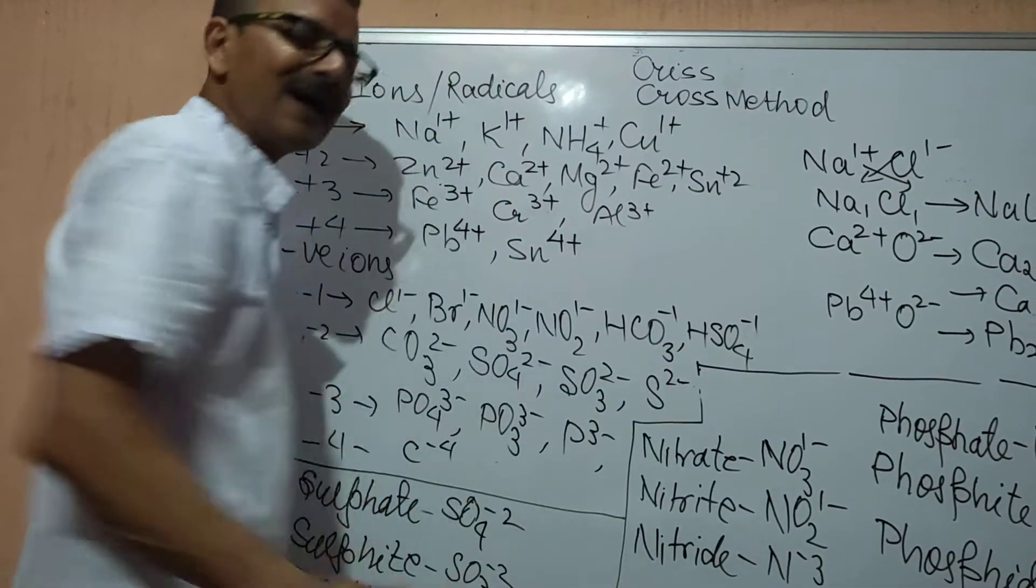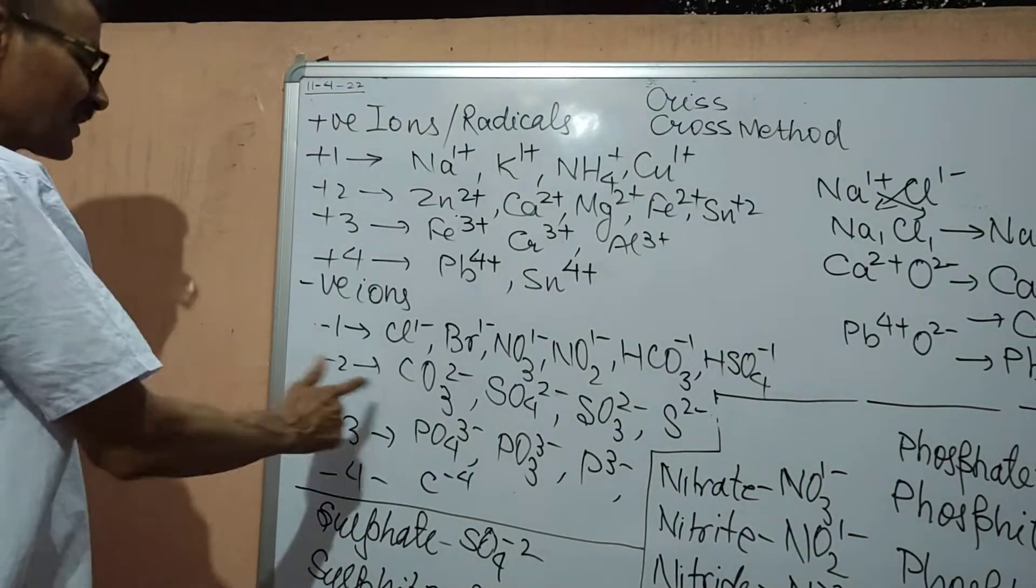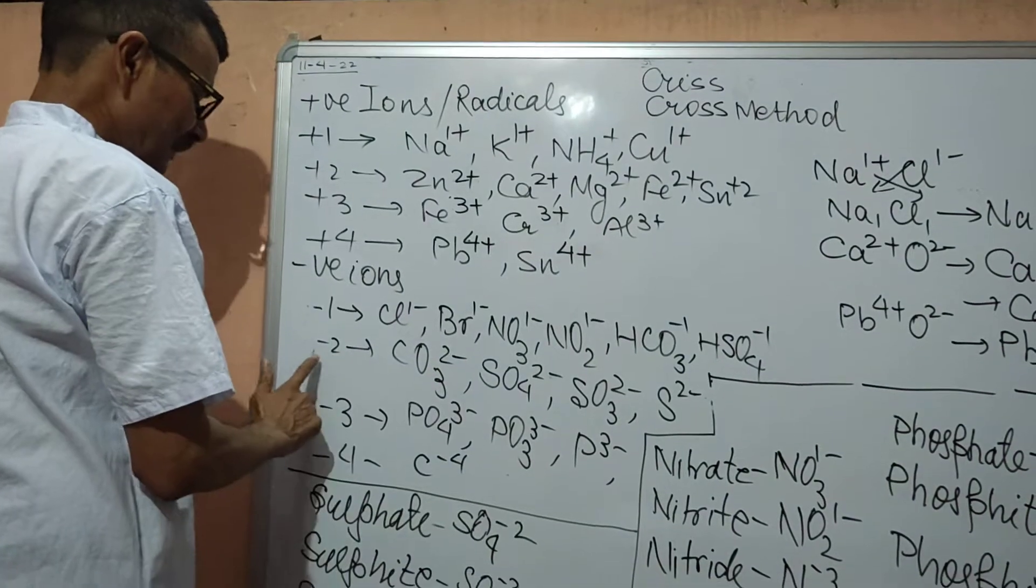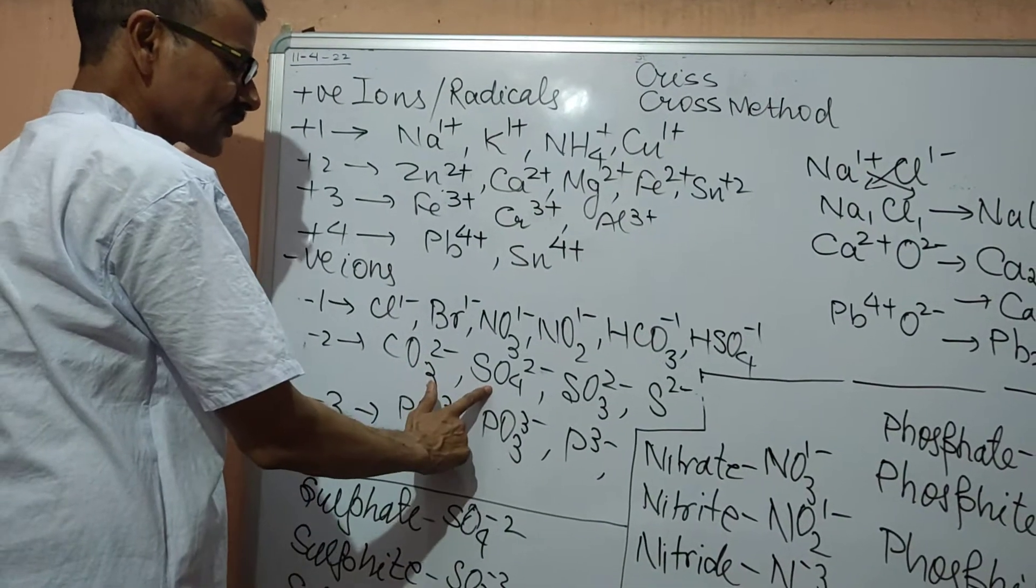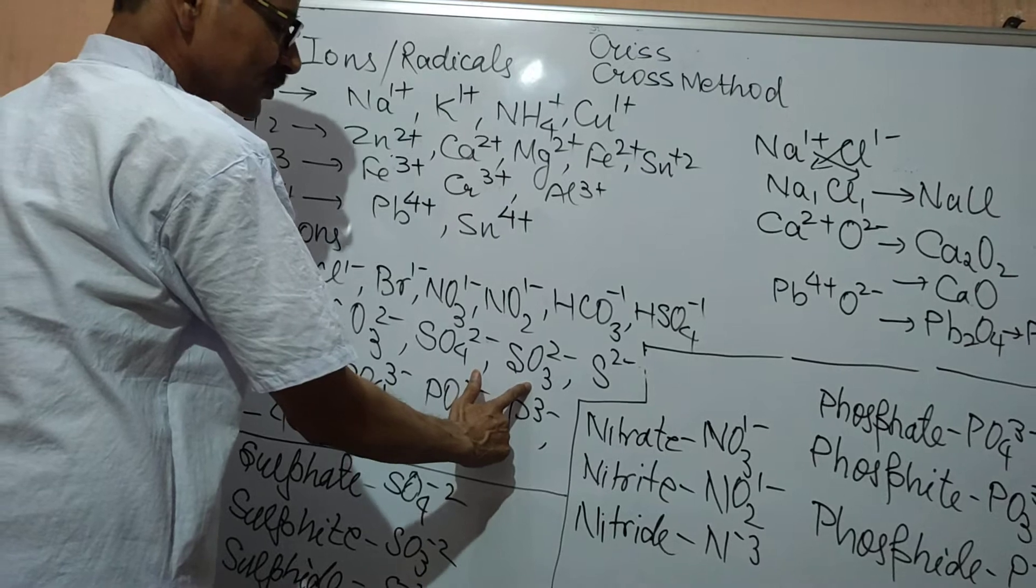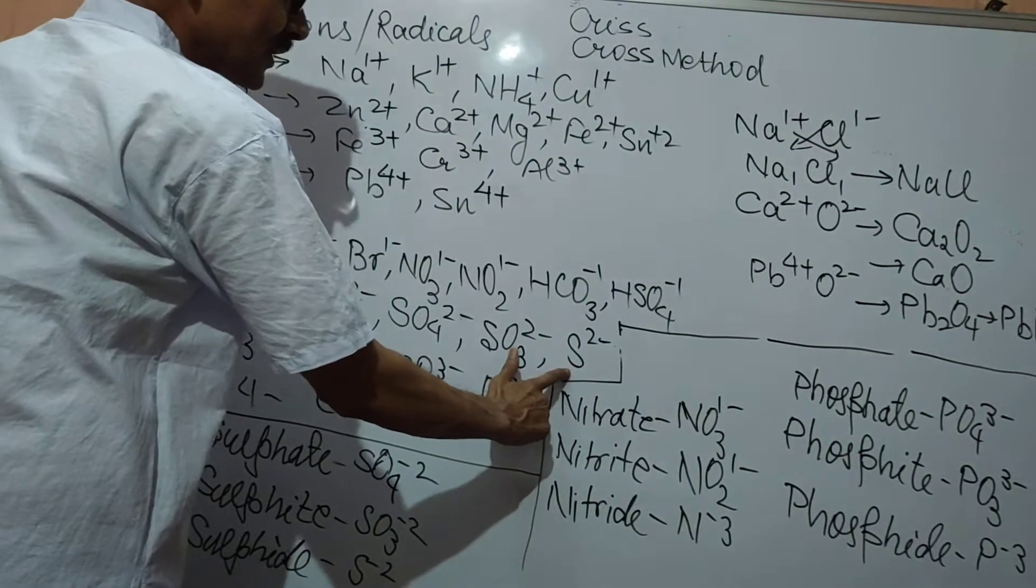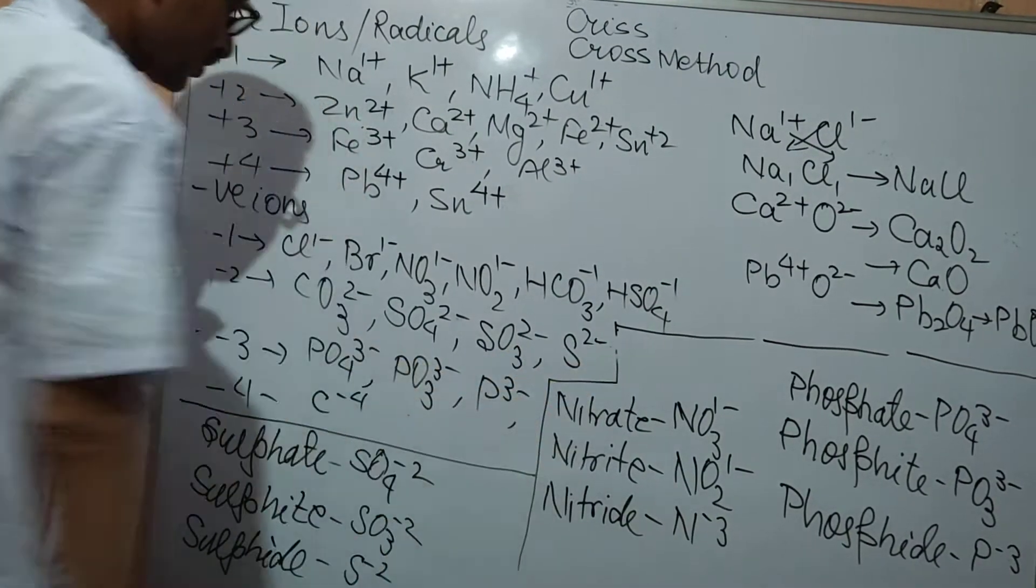And general known radicals are the carbonate, valency minus 2. Sulphate, SO4 2-. Sulphite, SO3 2-. Sulphide, S 2-.